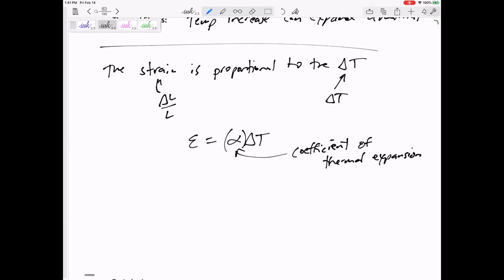If this is delta L over L, let's rewrite this a different way. The change in length due to a temperature change would be alpha delta T L. It's probably on that formula sheet.